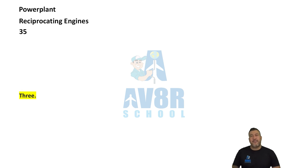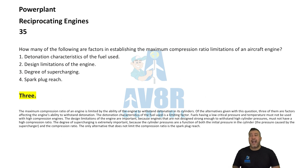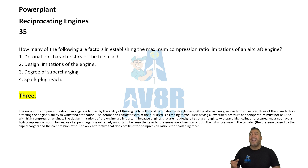Number 35. How many of the following factors are involved in establishing the maximum compression ratio limitations of an aircraft engine? The answer is three.